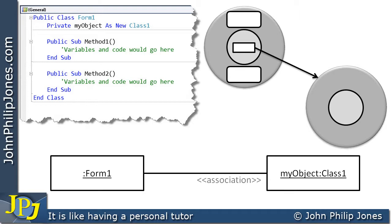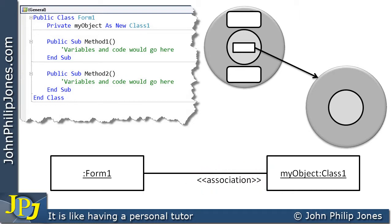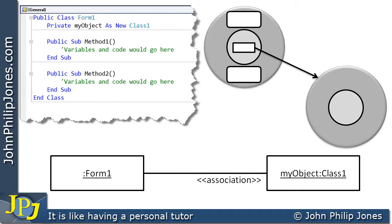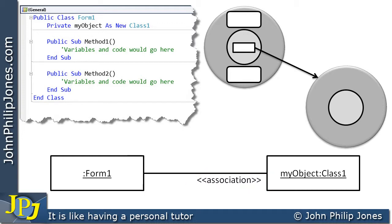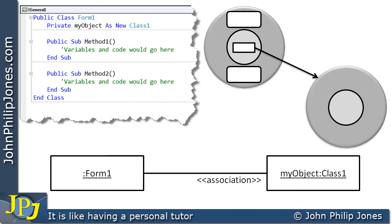The term association tells us, as a designer, that form 1 is able to see the instance of class 1, my object, because of the position of the declaration of the variable my object, which was declared at the class level. We give it the term attribute because we often call the centre of an object its attributes, but on a collaboration diagram we use the word association. Reflecting back on the previous video, which used the word local in this area — you've now seen two kinds of lines of visibility adorned with stereotypes: association, and in the previous video, local, because that variable was declared within a subroutine.